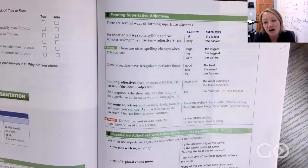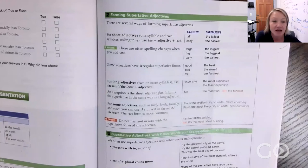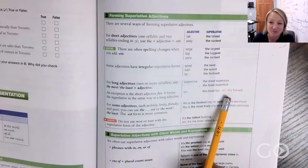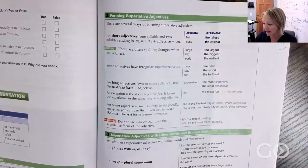When you have longer adjectives like expensive or interesting, you're going to say the most expensive or the least expensive. And remember fun - we don't say funnest, we just say the most fun. I don't know why that one is different, it just is.